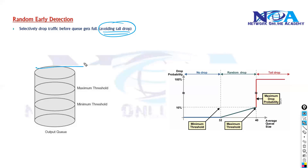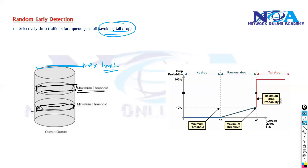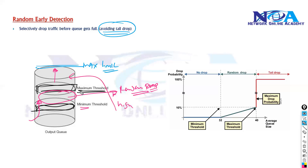The main job of RED is to avoid tail drop. We configure a minimum threshold value and a maximum threshold value. Once the queue occupancy goes beyond the minimum threshold toward the maximum threshold, it will start dropping packets randomly — before the queue becomes full. This ensures that high priority traffic gets into the queue and gets forwarded.